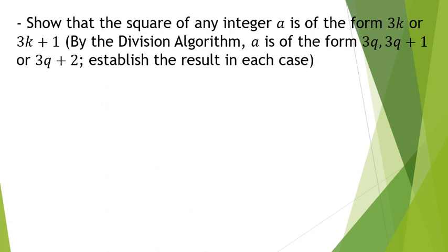First problem: show that the square of any integer a is of the form 3k or 3k plus 1. By the division algorithm, a is of the form either 3k, 3k plus 1, or 3k plus 2, and we need to establish the result in each case. Questions will be worded very much like this — show that something has to hold, and then by the division algorithm, your integer is of one of the possible forms.